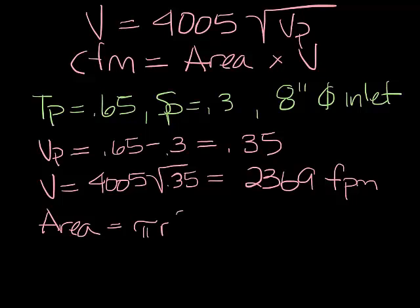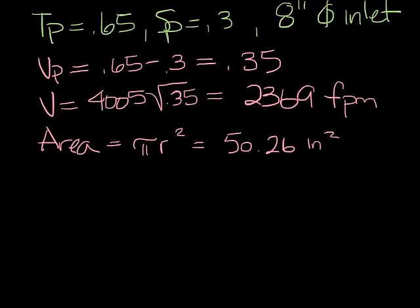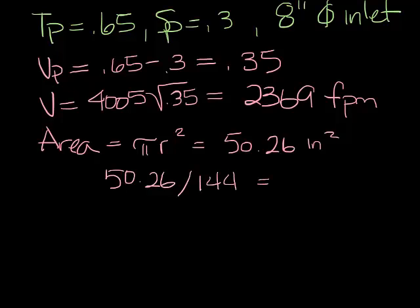Now the area is pi r squared, so when you work that out you come up with 50.26 square inches. Now we need to work in feet, so let's take our 50.26 inches and divide it by 144 square inches per square foot. And you get 0.35 square feet.